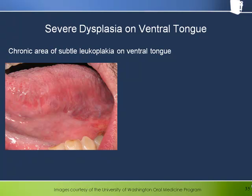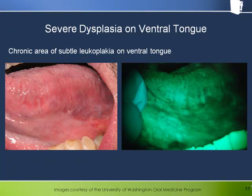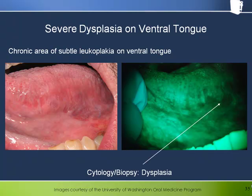Here is a worrisome looking area under white light that becomes more so after the unusual, irregularly shaped dark area becomes apparent under Velscope. There is little to suggest this particular morphology based on the presentation under white light, and this makes it all the more troubling. Cytology and biopsy showed there to be dysplasia in the area indicated by the arrow.